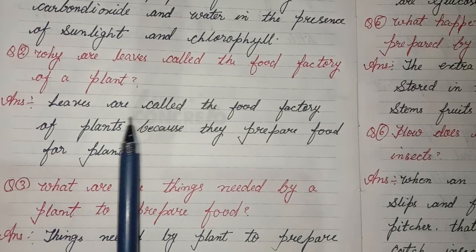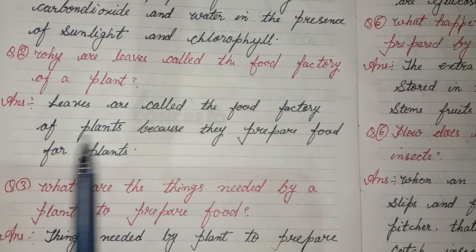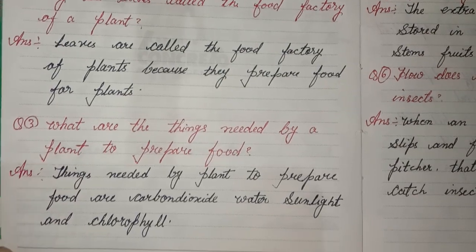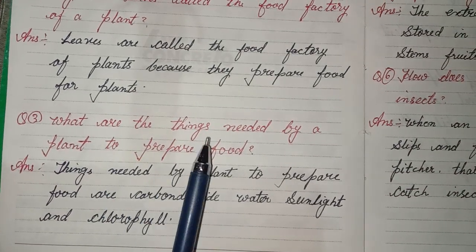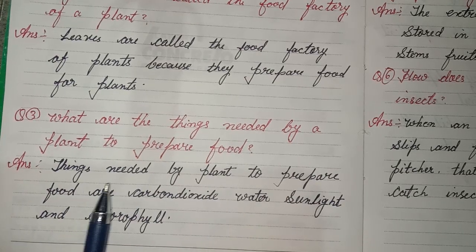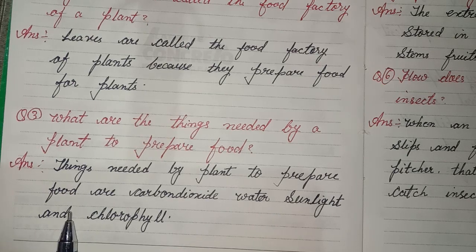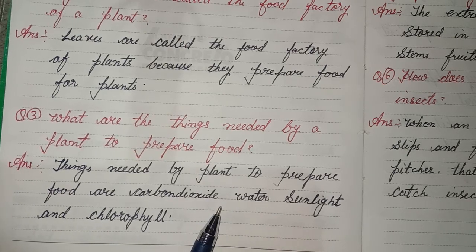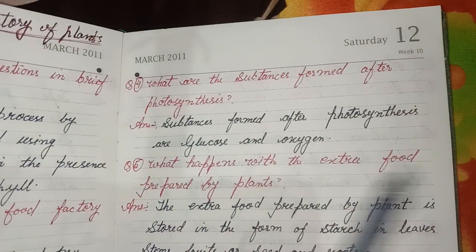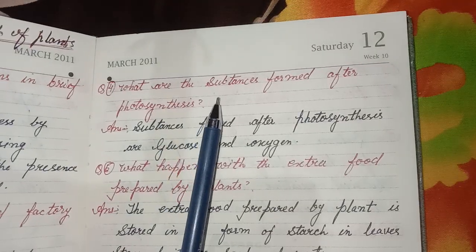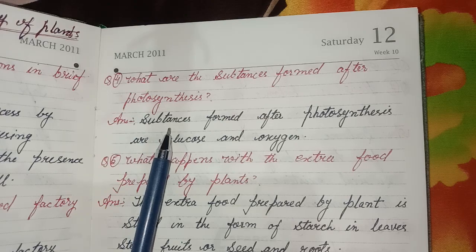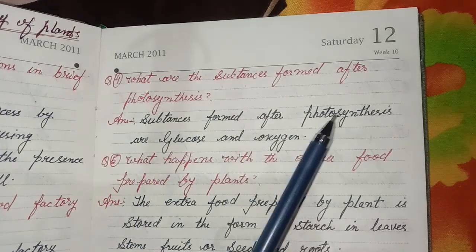Answer: Leaves are called the food factory of plants because they prepare food for plants. Third question: What are the things needed by a plant to prepare food? Answer: Things needed by plants to prepare food are carbon dioxide, water, sunlight, and chlorophyll. Fourth question: What are the substances formed after photosynthesis?